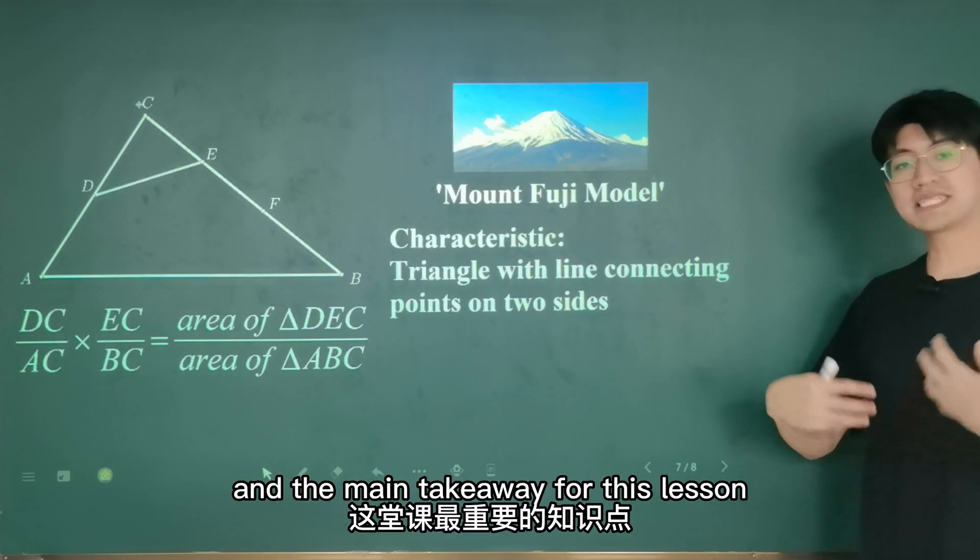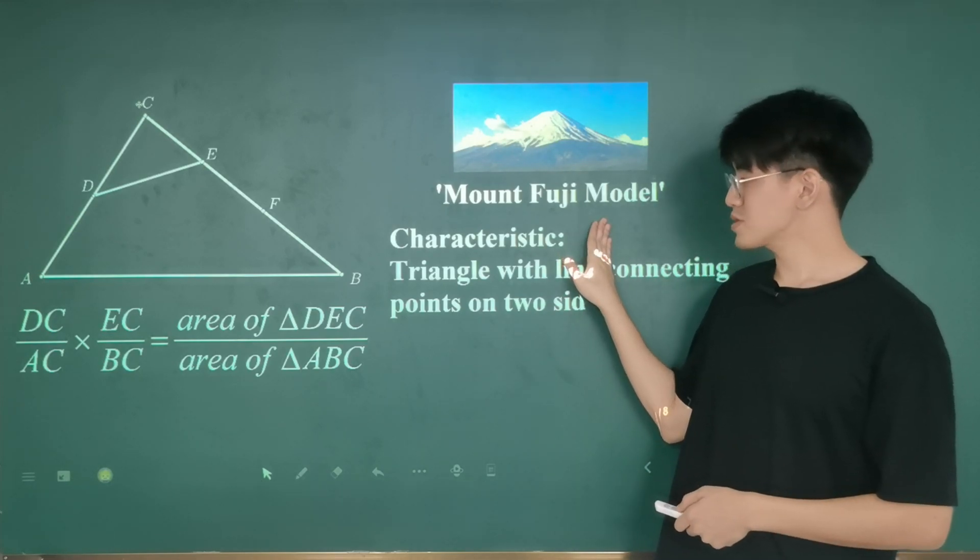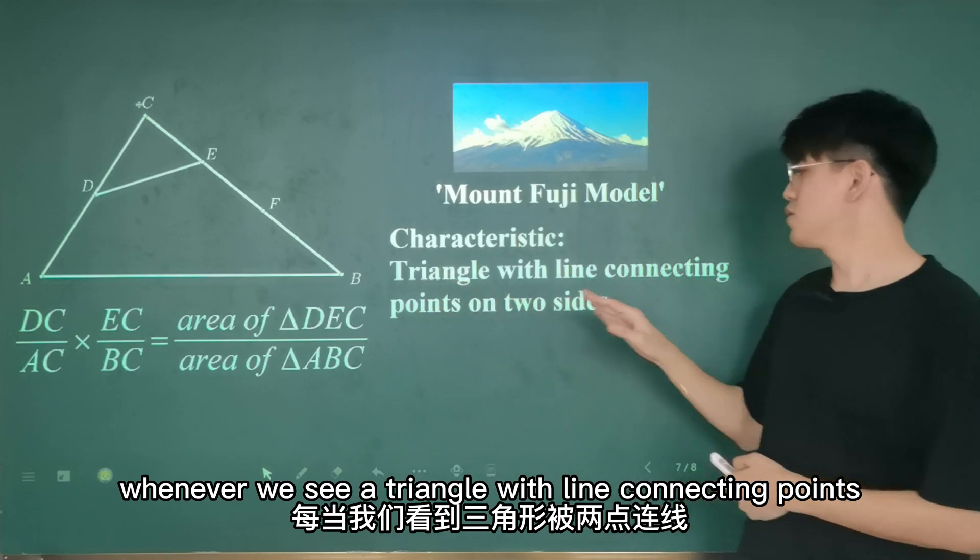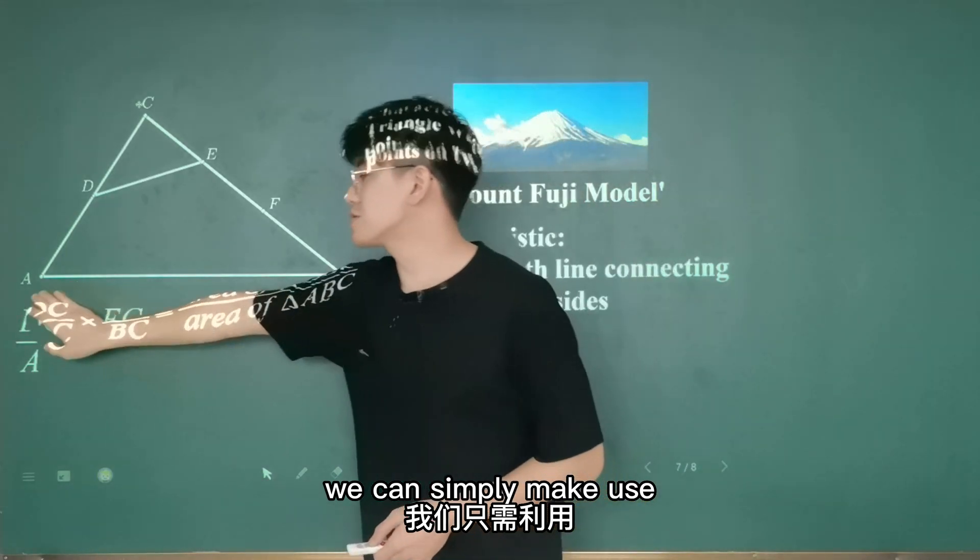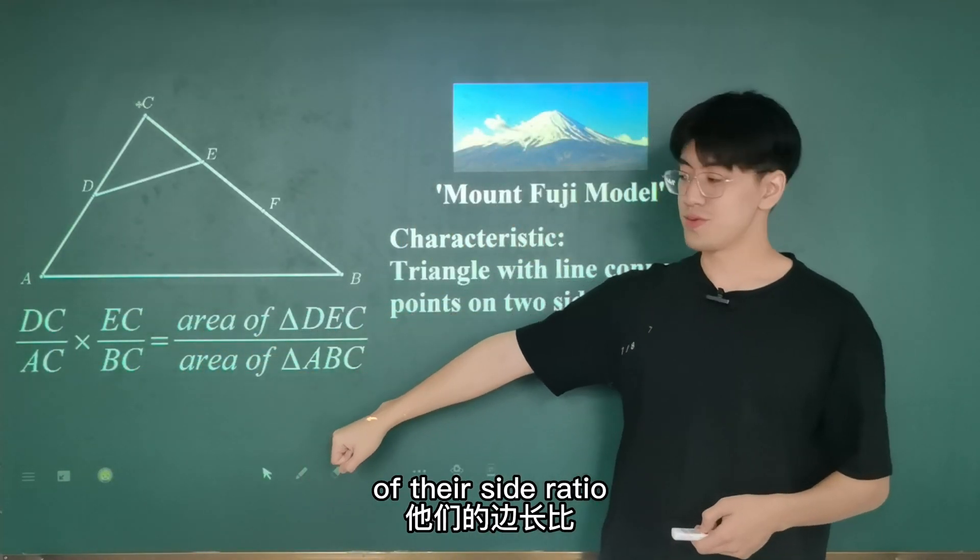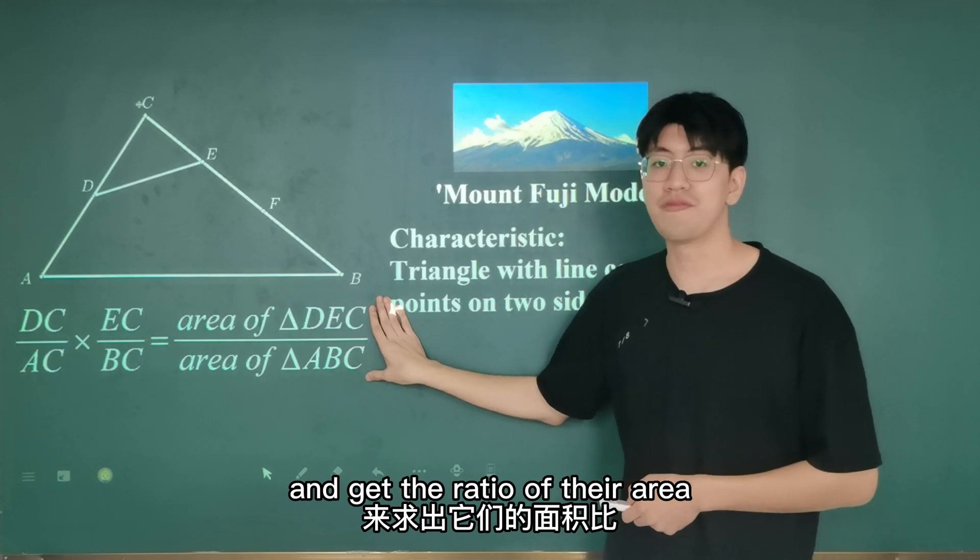And the main takeaway of this lesson is the Mount Fuji model. We know whenever we see a triangle with line connecting points on two sides, we can simply make use of their side ratio, multiply them together, and get the ratio of their area.